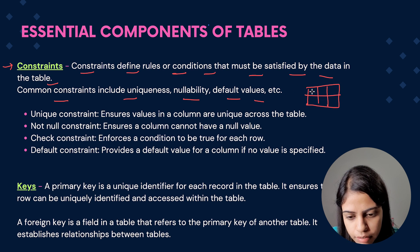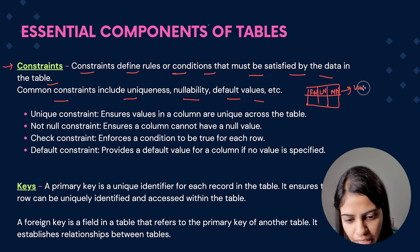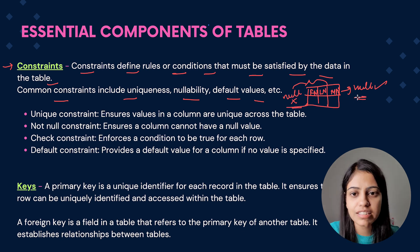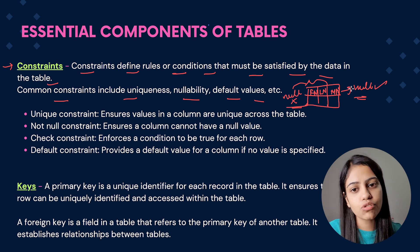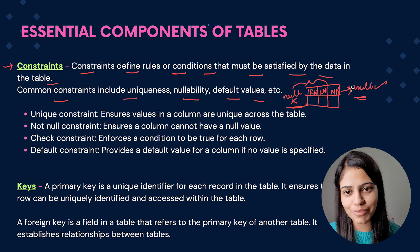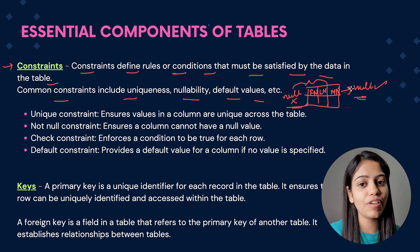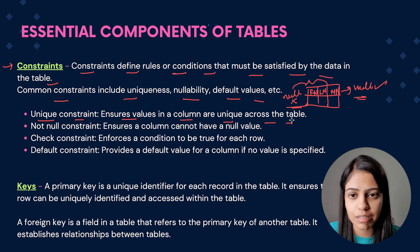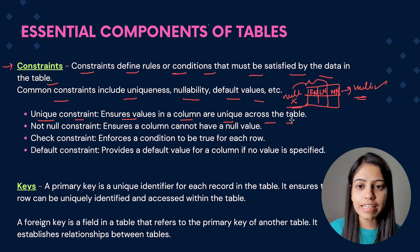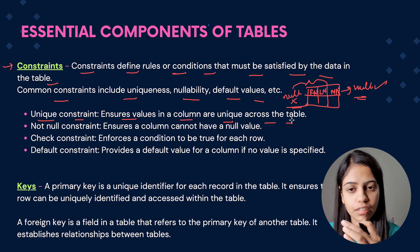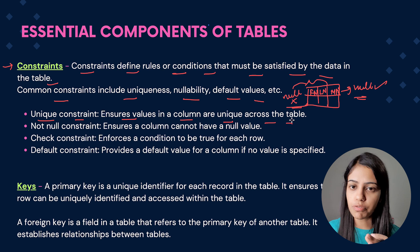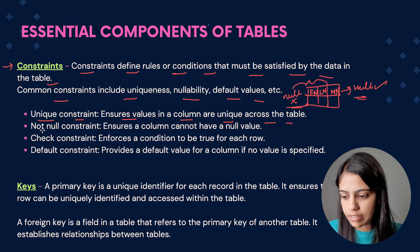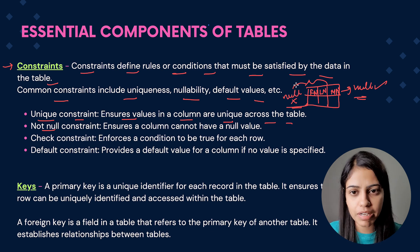So for Aadhaar details, I have first name, last name, and middle name. Middle name is something which can have null values, but first name and last name are both something which cannot have null values. These particular checks that we put on in our database are called constraints — they basically ensure we are not putting any wrong kind of data. There are rules we need to follow when putting data into the database. The first constraint is the unique constraint, which ensures the values in a column are unique across the table — for example, ID should remain unique for all entries. The second is the not-null constraint, as in the Aadhaar card example where first name and last name cannot be null.